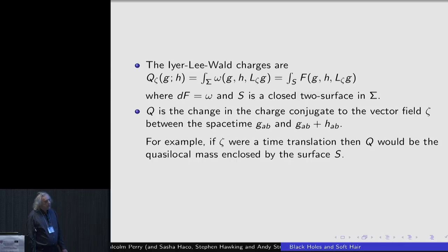The physical interpretation of this is just that q is the change in some charge conjugate to the vector field zeta if you move from the spacetime g to the spacetime g plus h. So for any vector field zeta, there will be such a charge, and this gives rise to the infinity of charges which can be associated with soft hair, if you pick the right zetas.